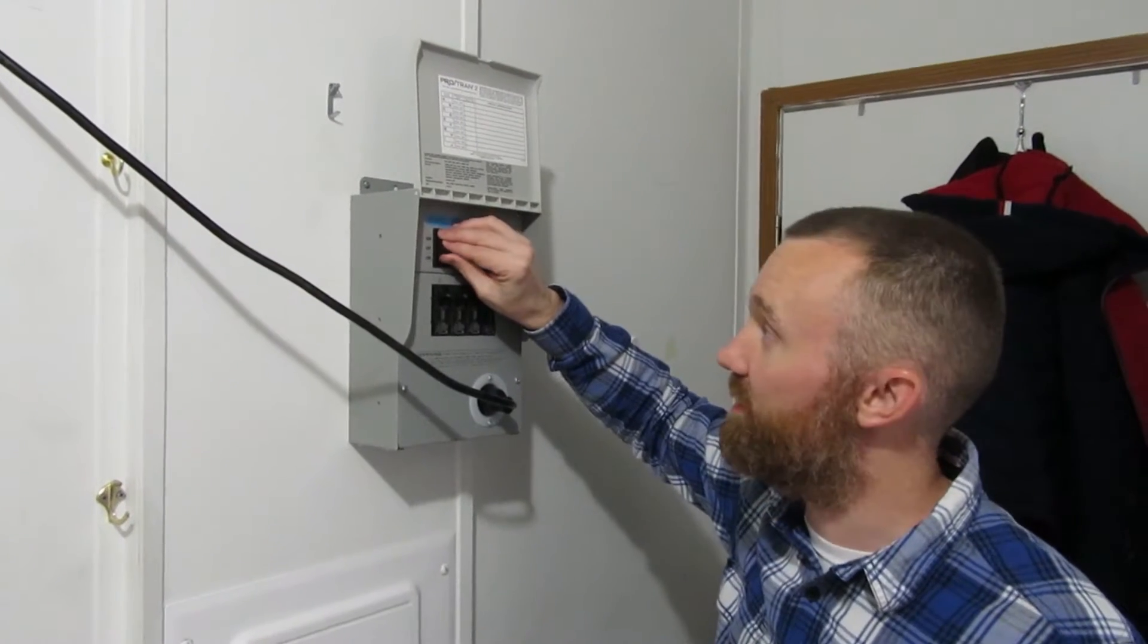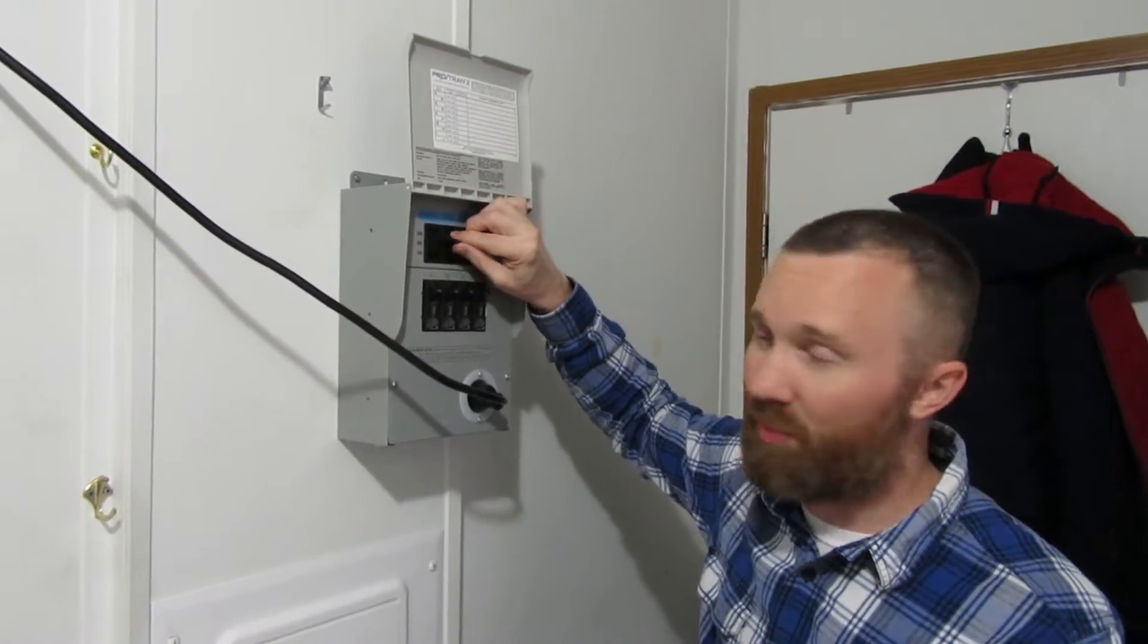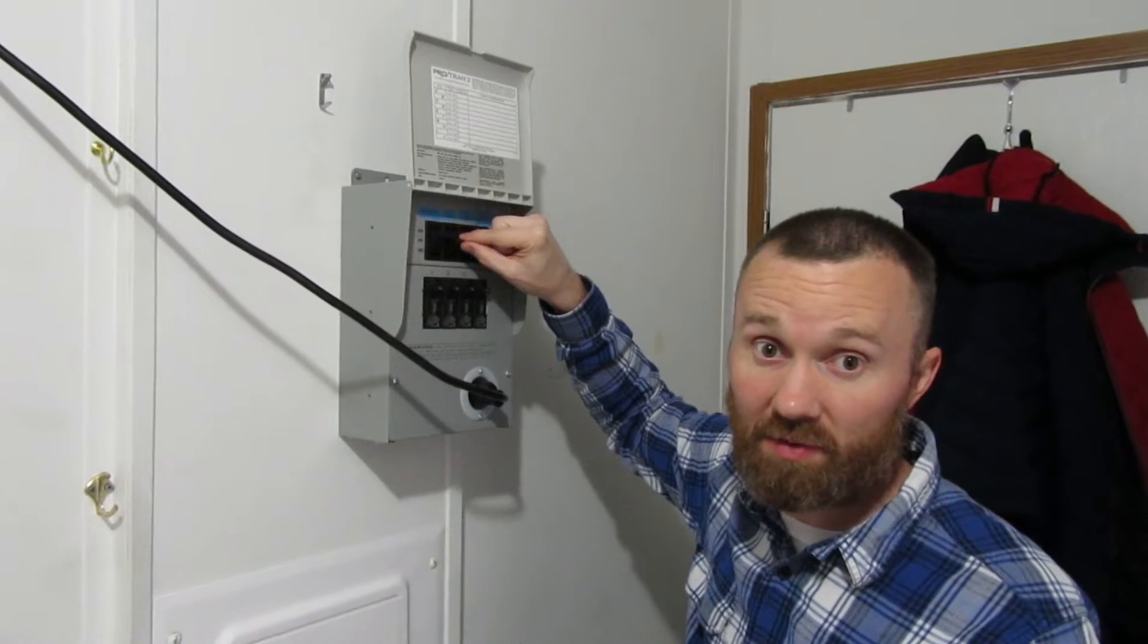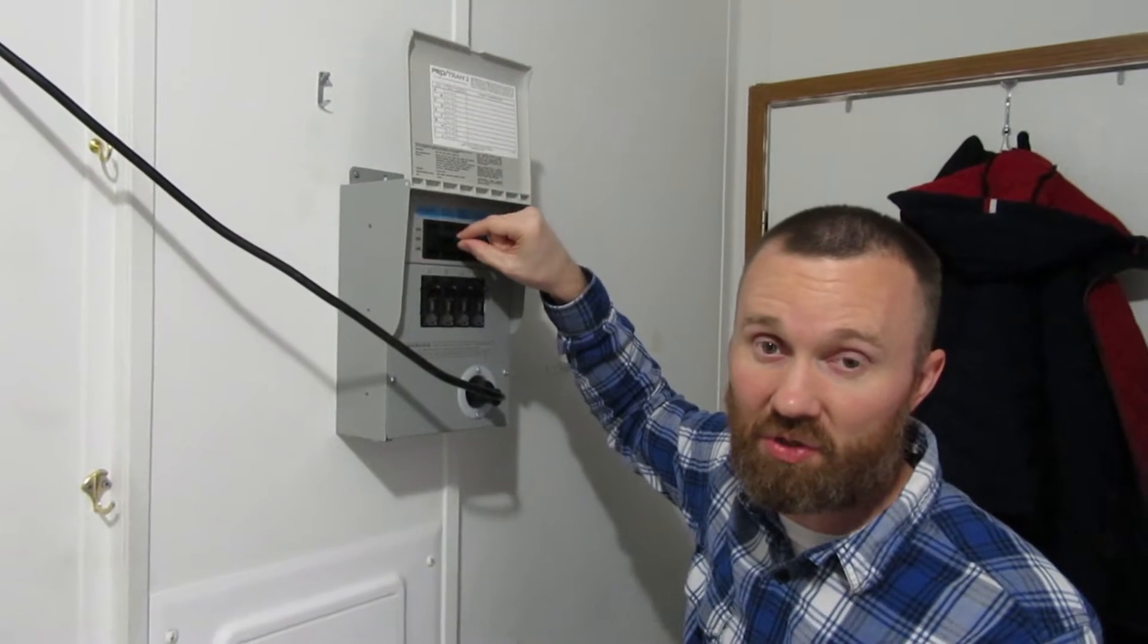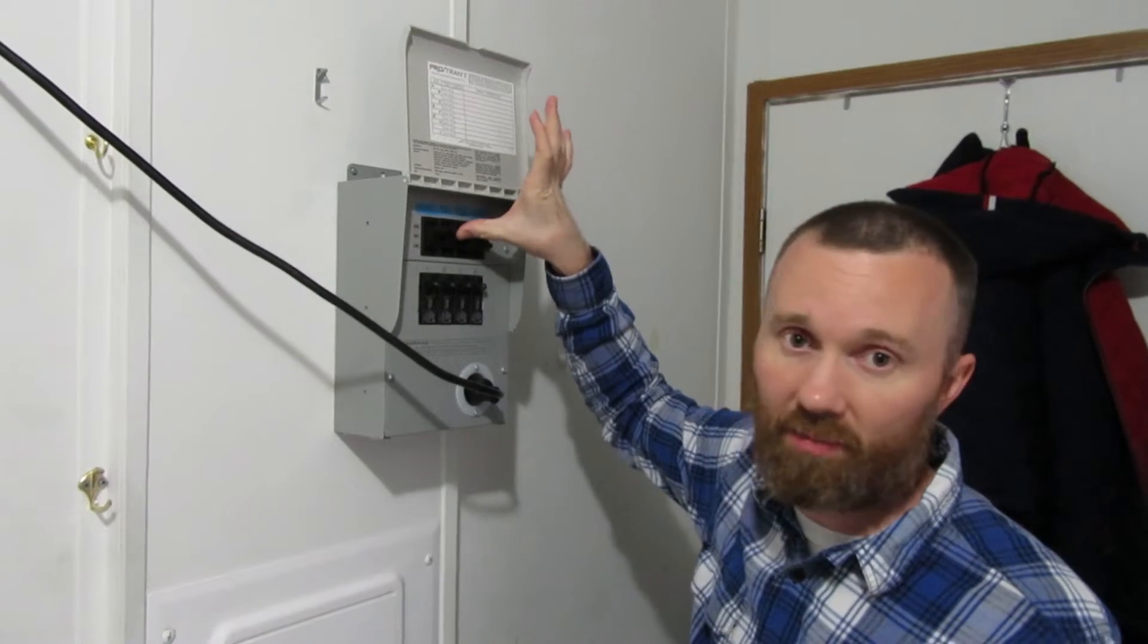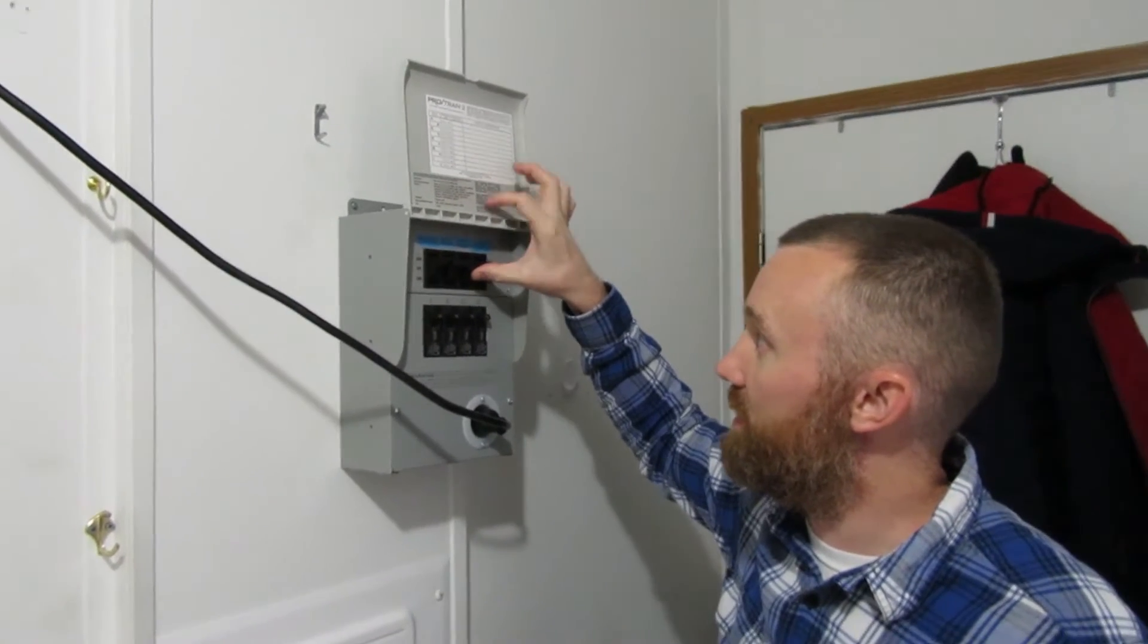So now all we have to do is just flip these four switches up. In the middle position, that turns it off. So it takes it off of the street power, and then all the way up is generator power. So do that for all four of these.